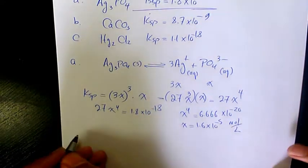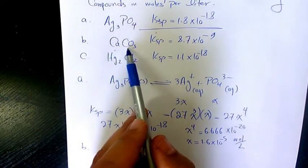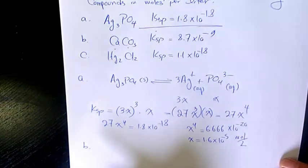That's the molar solubility. Let's do the same thing for Part B and Part C. Part B is Calcium Carbonate. KSP is 8.7 times 10 to the power of negative 9.